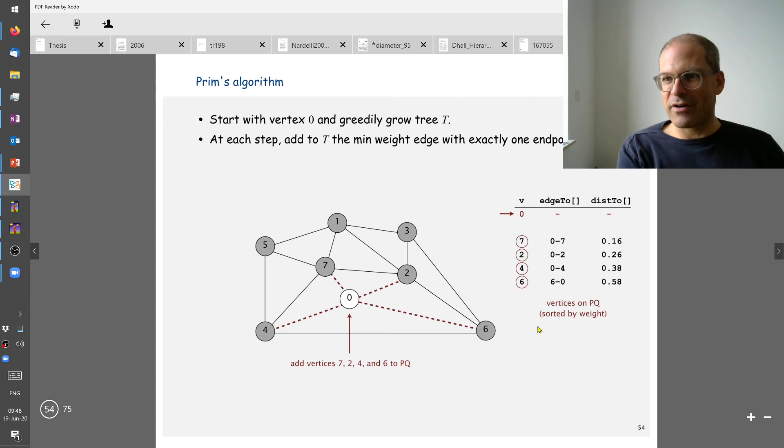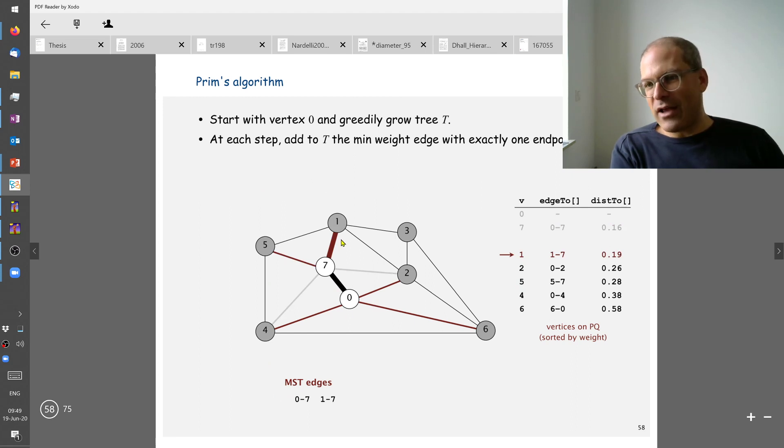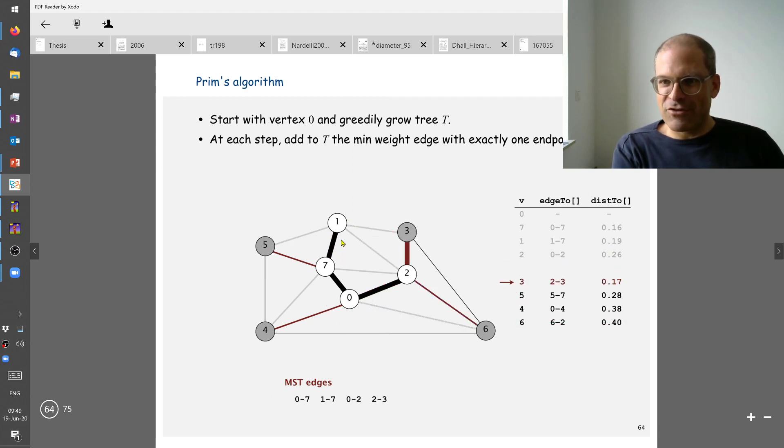The cheapest one would be the edge to the node number seven. So we're going to use that. And now we look at what neighbors seven brings to the game. Seven has these four neighbors and these new edges will also be considered. We now visit these edges in ascending order and let's see if something interesting happens at some point.